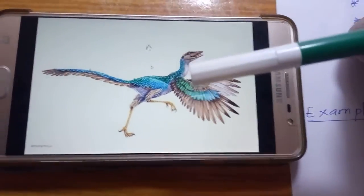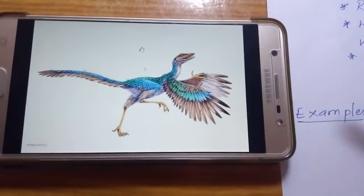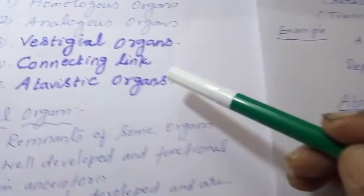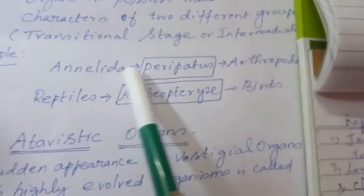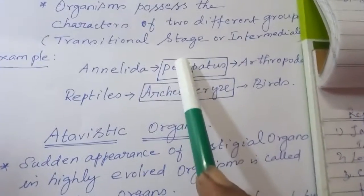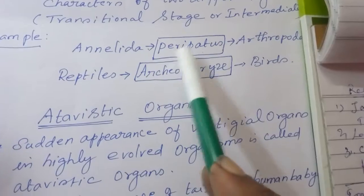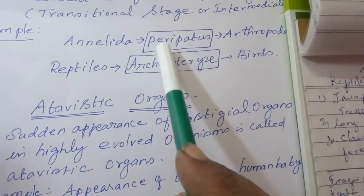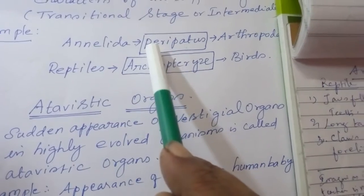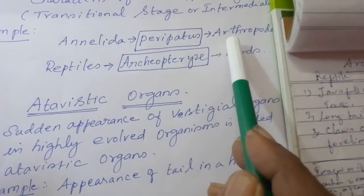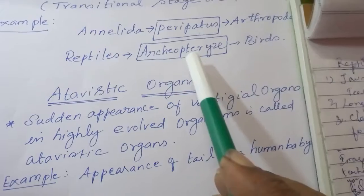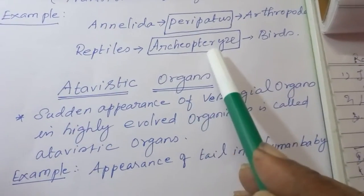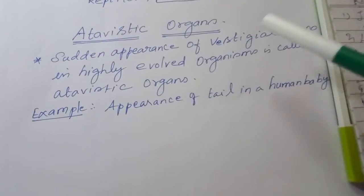Because Archaeopteryx has characters of both groups, it is neither placed under reptiles nor under birds. Even though it is fossilized, it is considered a separate group and is called a connecting link, supporting biological evolution. Similarly, Peripatus is a transitional organism — from it, Arthropoda organisms should have originated, just as birds should have originated from reptiles through intermediate organisms like Archaeopteryx.